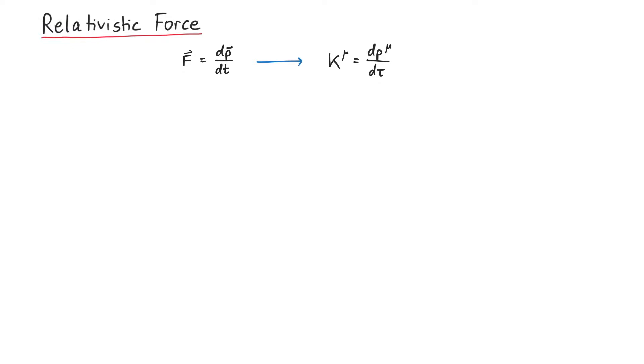If you use the time derivative instead, k mu would not be a 4-vector. Assuming a constant mass, you can also write this as mass times the derivative of 4-velocity, which yields mass times 4-acceleration b mu.